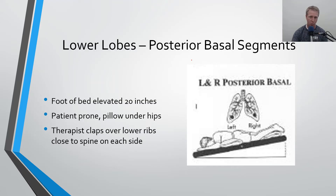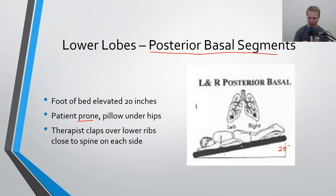For the lower lobes posterior basal segments, the patient is prone and still 20 inches up in Trendelenburg. Place a pillow under the hips for patient comfort. The therapist claps on the lower ribs close to the spine on each side. Since the patient is entirely prone, this position works well for both right and left posterior basal segments simultaneously.